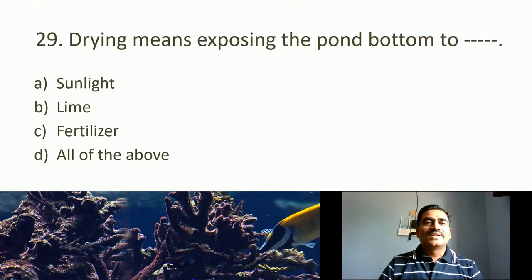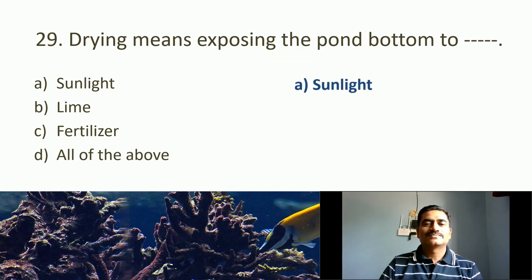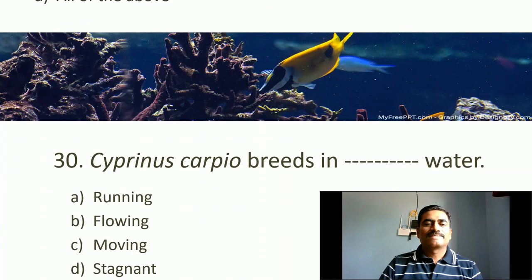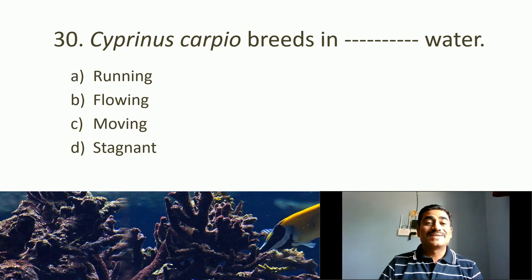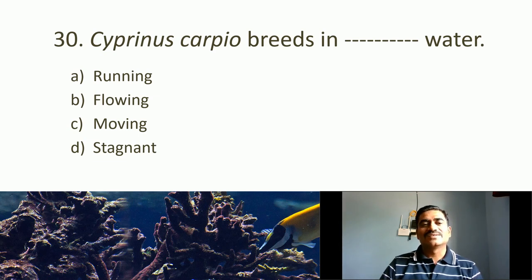Twenty-ninth MCQ: Drying means exposing the pond bottom to sunlight. Thirtieth MCQ: Cyprinus carpio lives in what type of water? Options: running water, flowing water, moving water, stagnant water. Running, flowing, and moving water are synonymous for lotic water bodies. Stagnant water is a lentic water body. Cyprinus carpio lives in stagnant water.